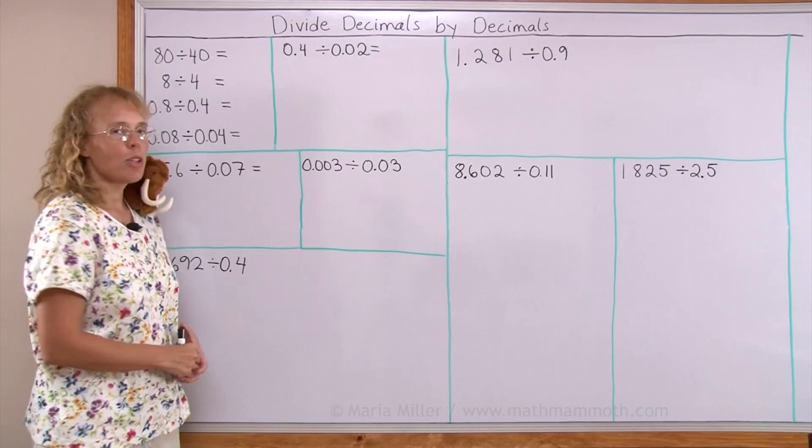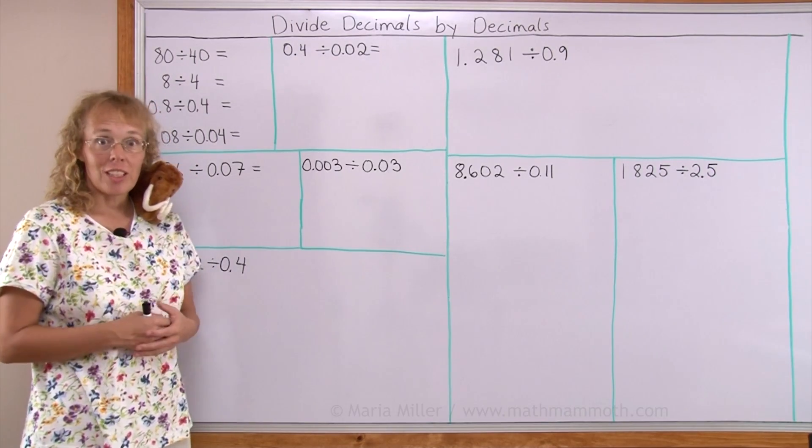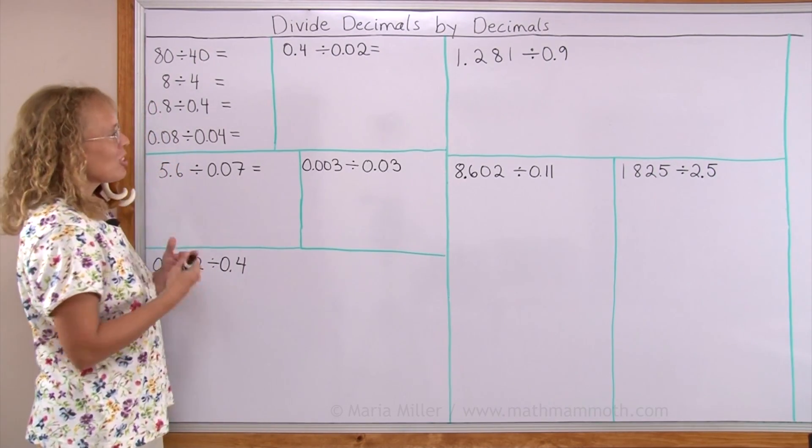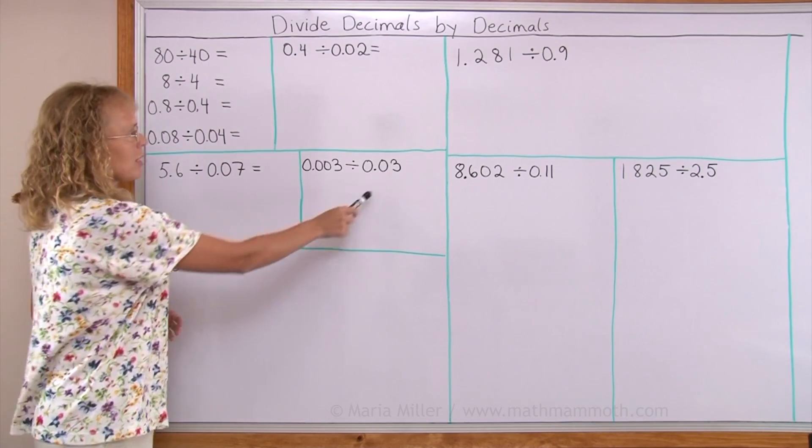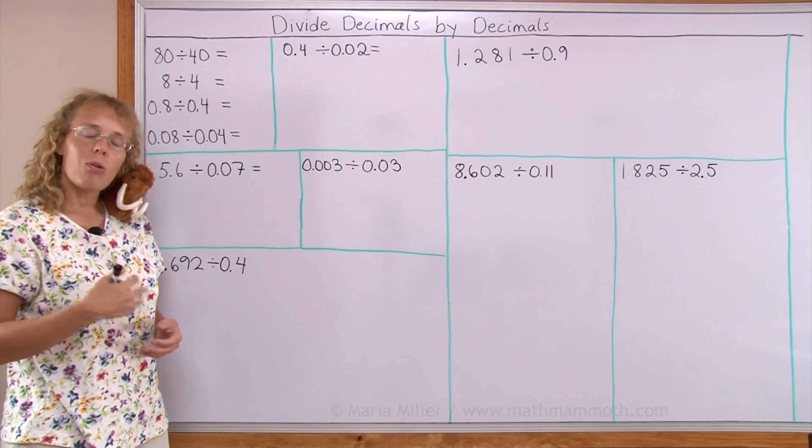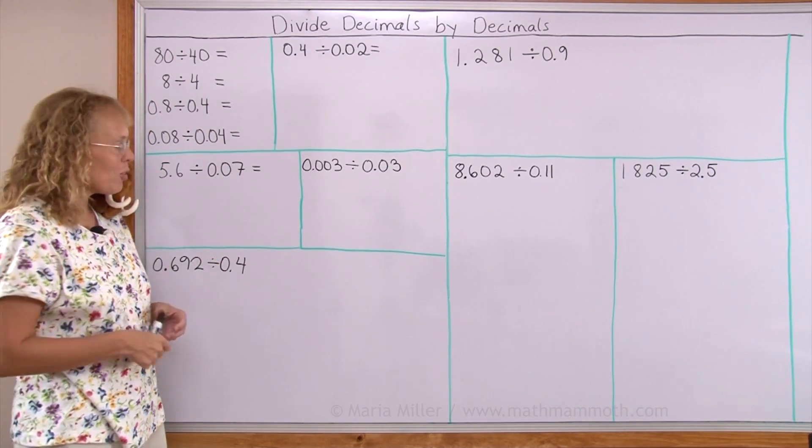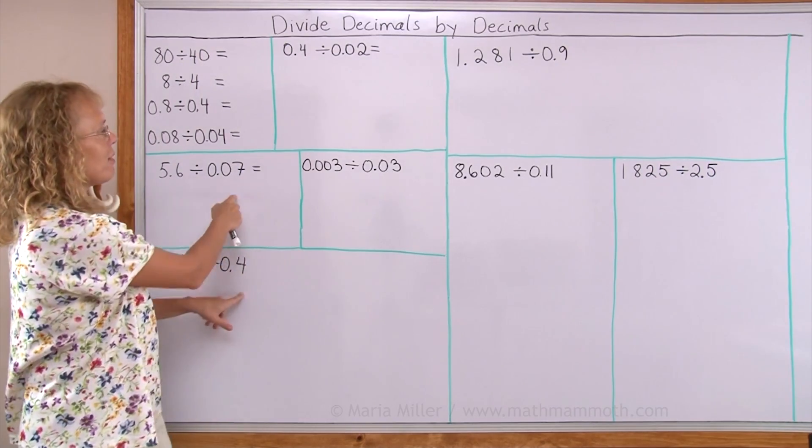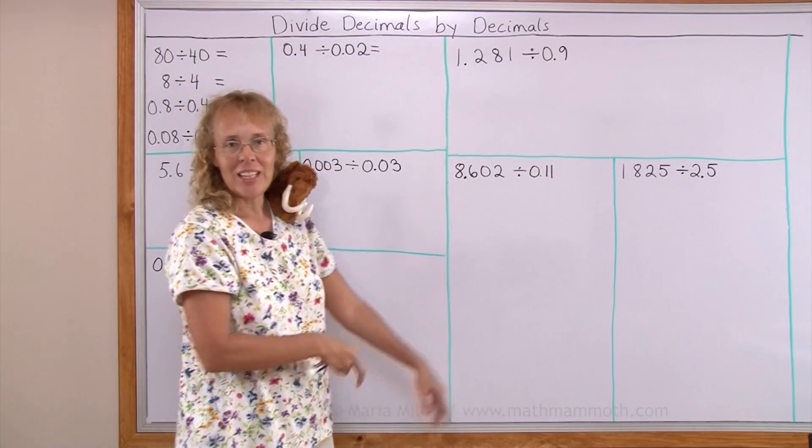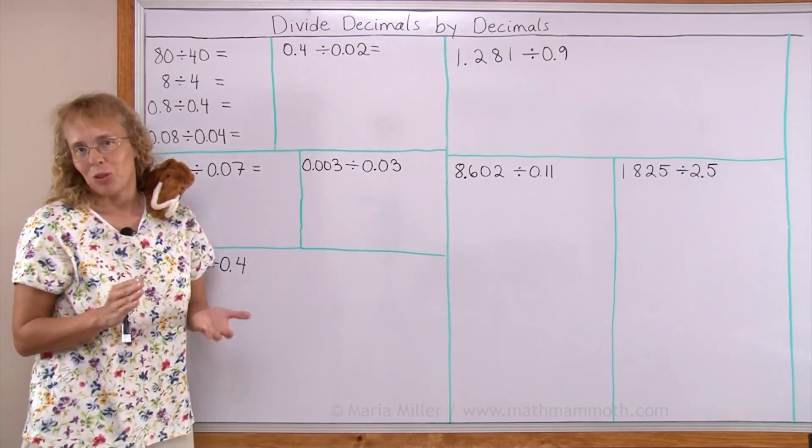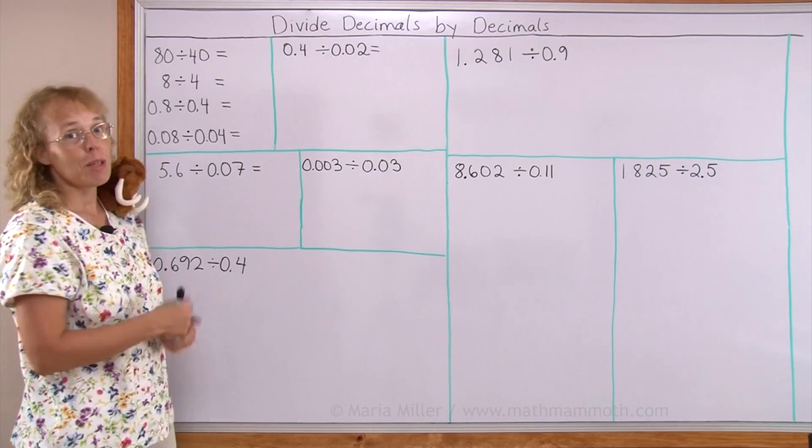And I want to show you what this little shortcut will be based on. Essentially we are going to change each one of these decimal divisions into whole number divisions. And you already know how to divide by 4 or by 7 or by 3 or by 11. So there's not very much new stuff in this lesson. It's going to actually be pretty easy.